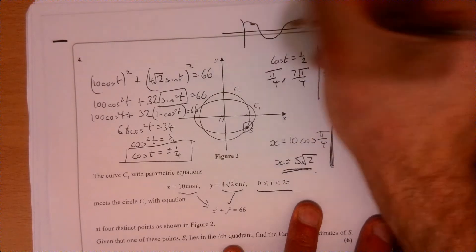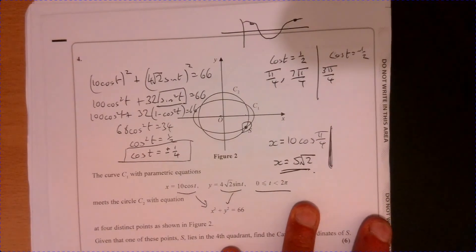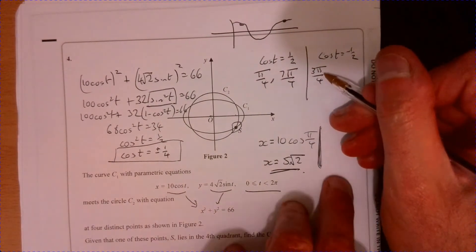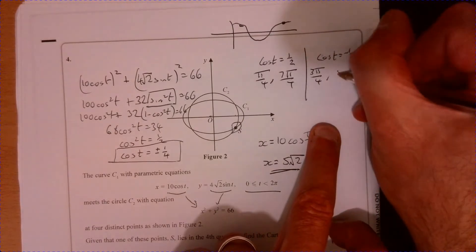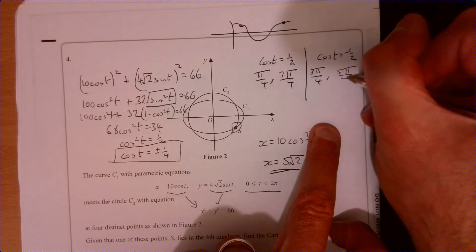Okay. So we've got a value here. We've got a value over here somewhere. If I do the same with this one, I'm going to have five pi over four.